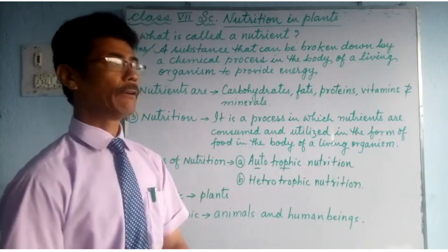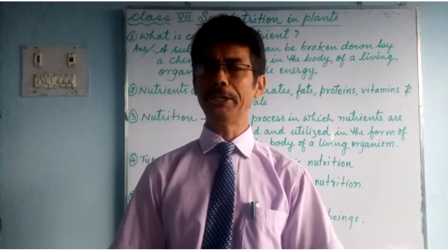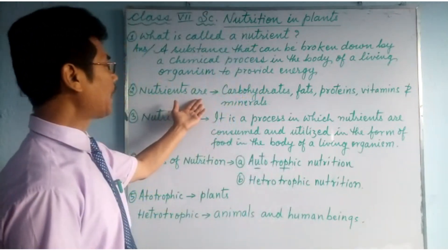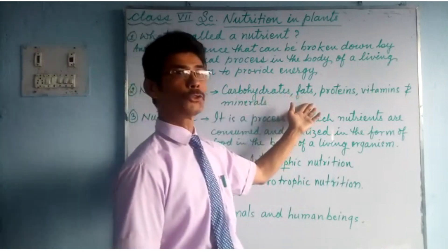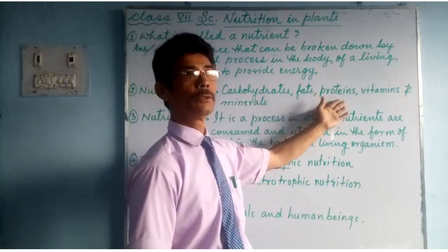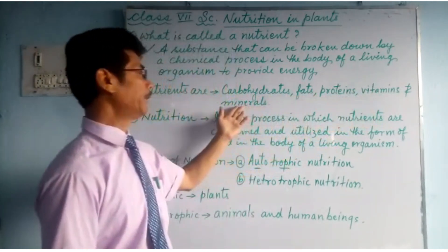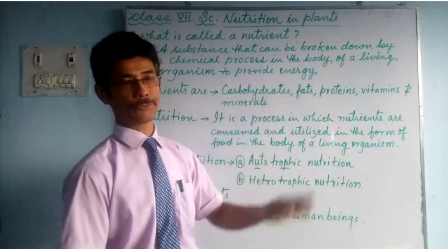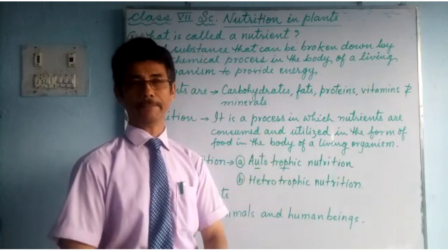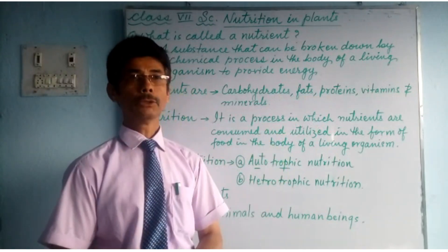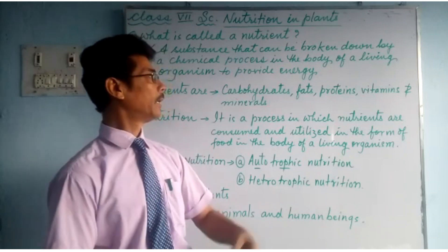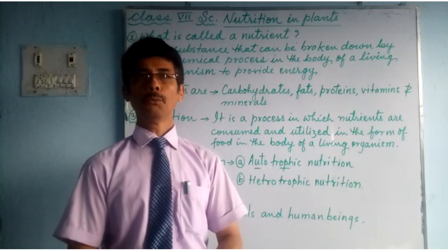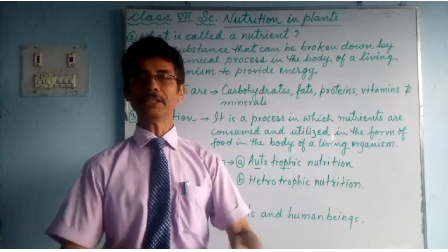Our food contains various nutrients. Number 2: nutrients are carbohydrates, fats, proteins, vitamins, and minerals. Our food contains these nutrients and we require them. Our body breaks them down through a chemical process, and we utilize these nutrients to produce energy for various activities.